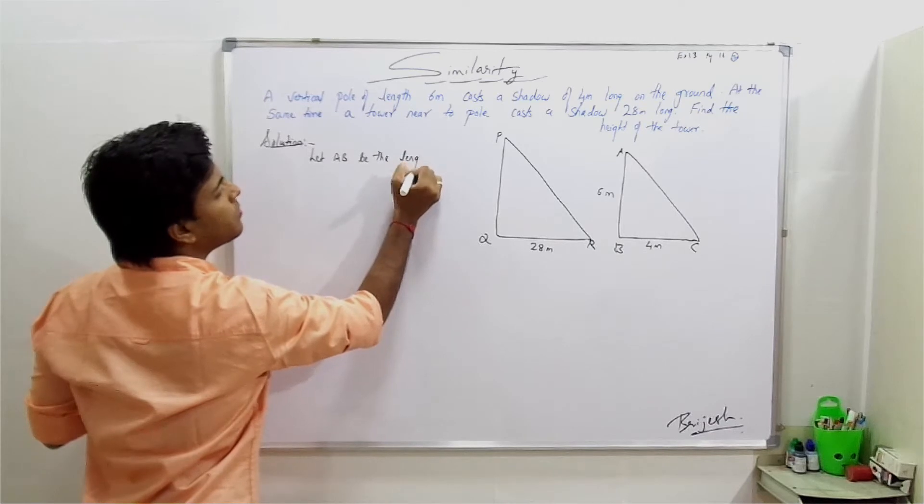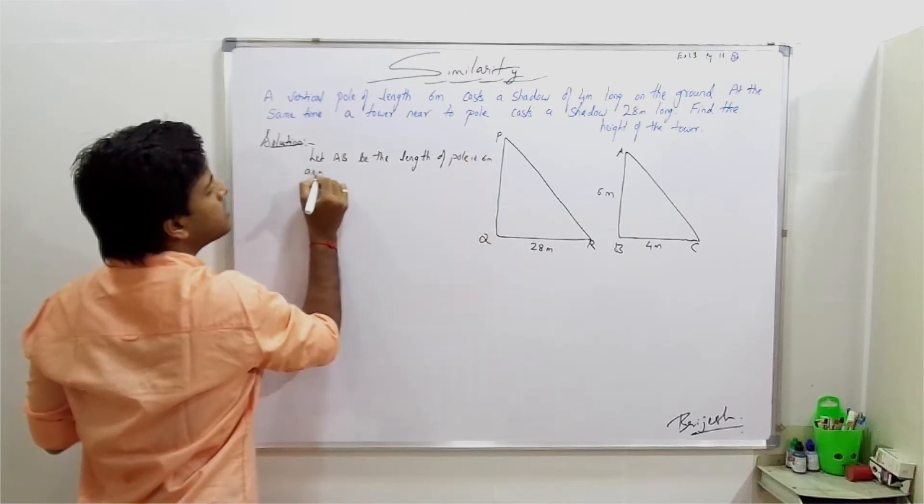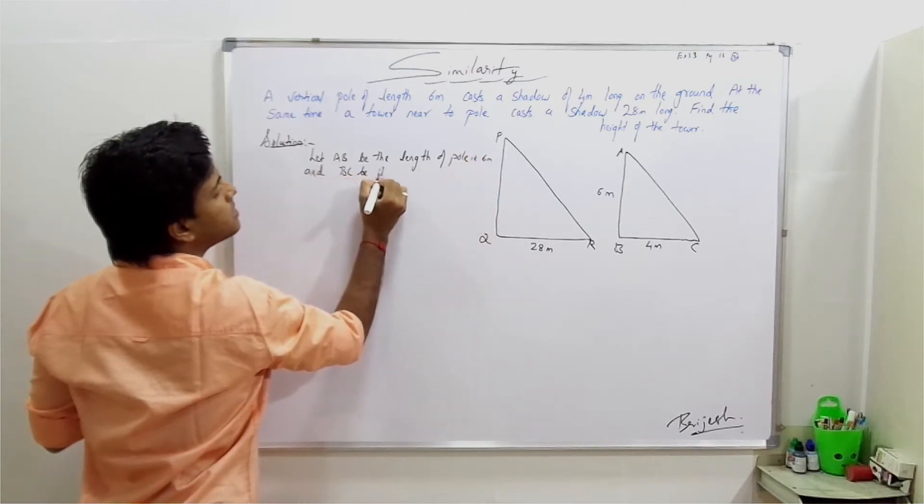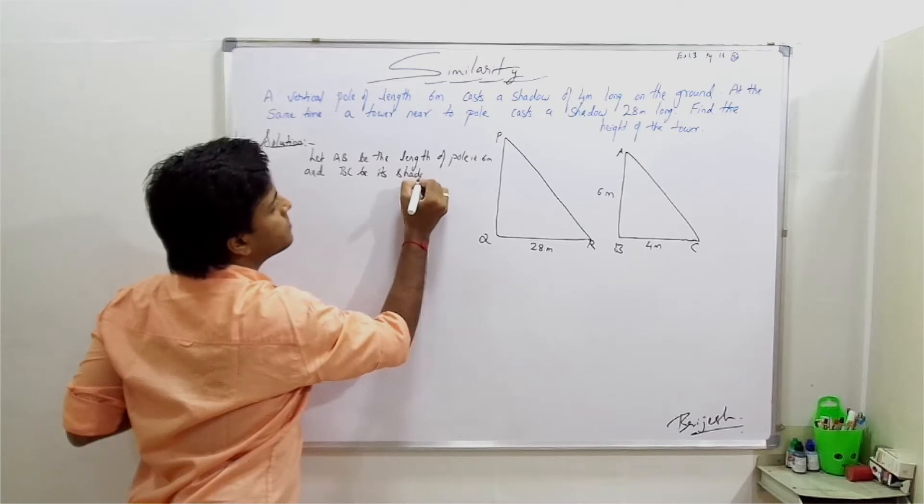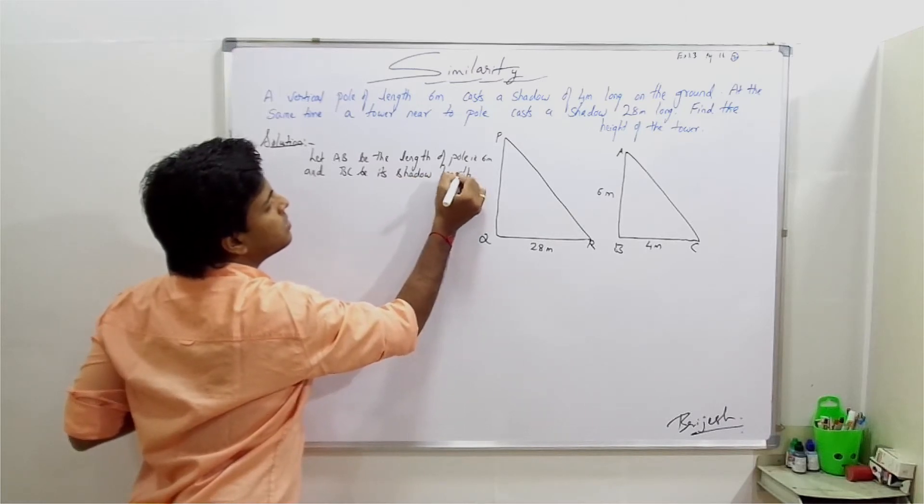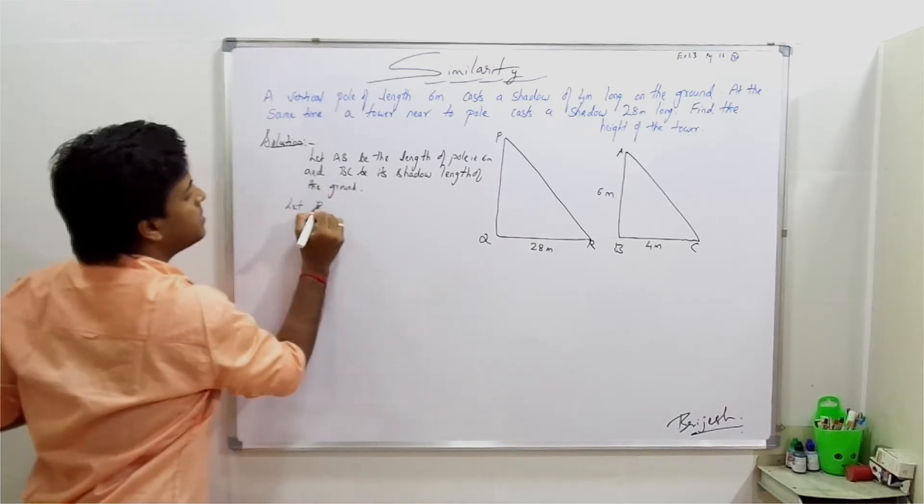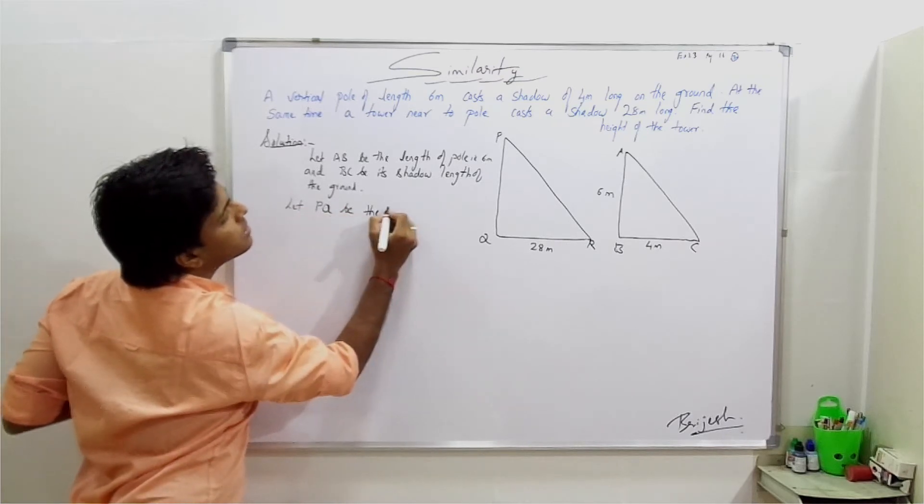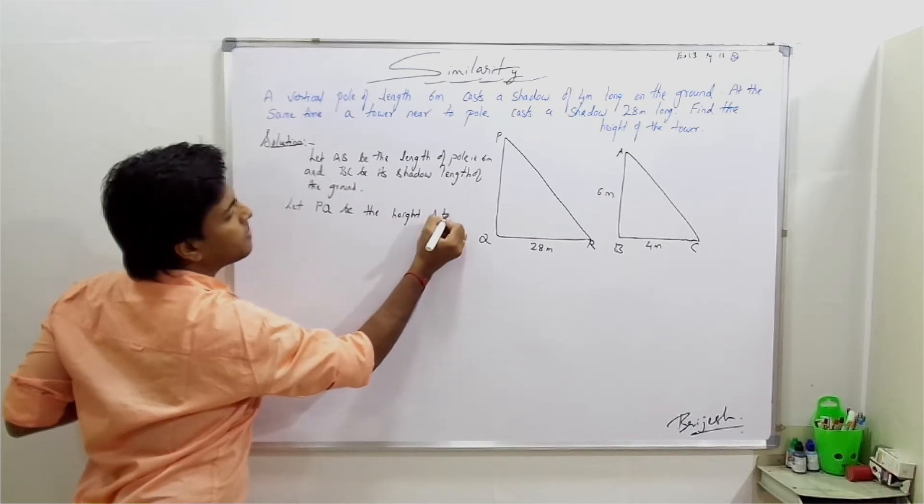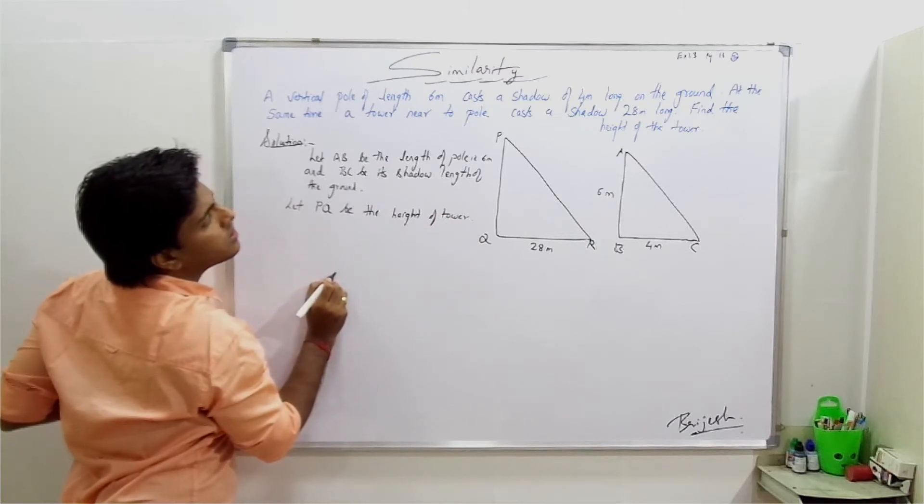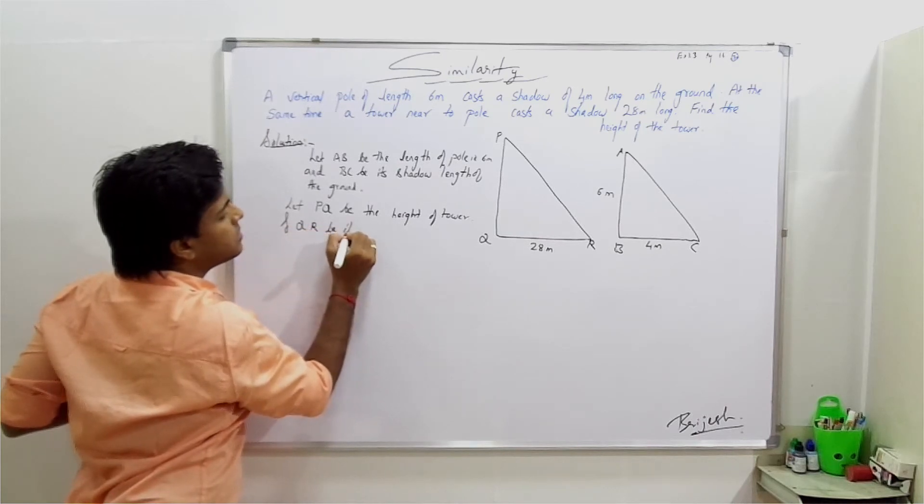Let AB be the length of pole, that is 6 meters, and BC be its shadow on the ground. Let PQ be the height of tower and QR be its shadow.